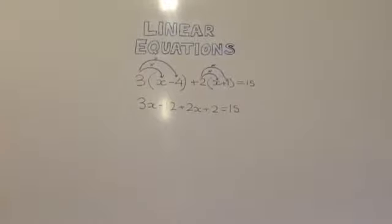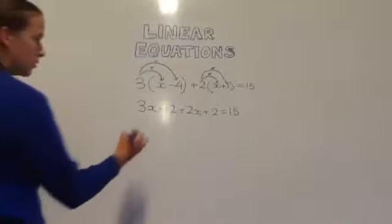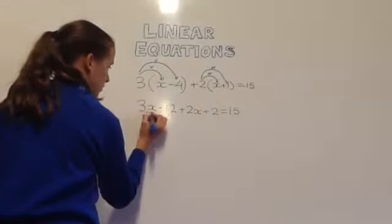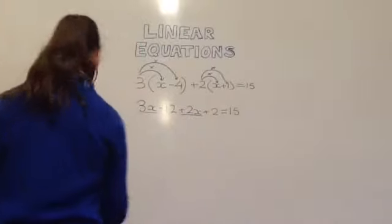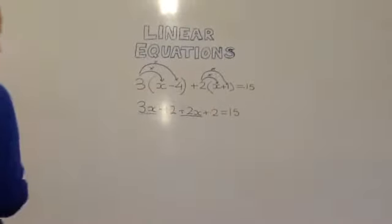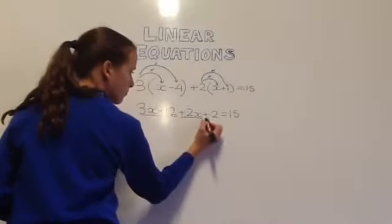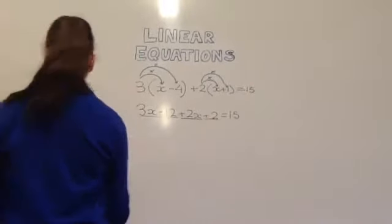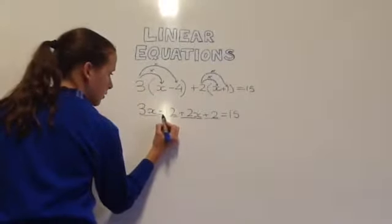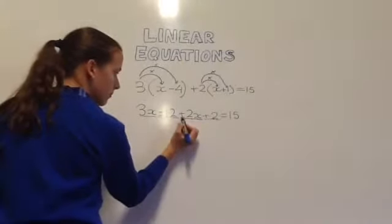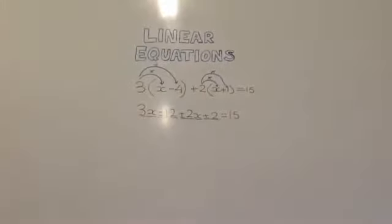Next you have to collect the like terms. 3x and positive 2x are like terms and negative 12 and positive 2 are like terms. Remember that with these three numbers you have to include the symbol in front of it not just the number by itself.